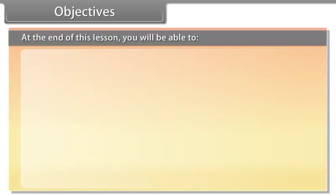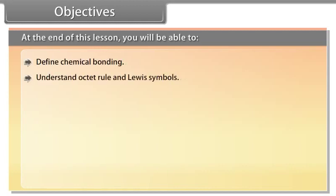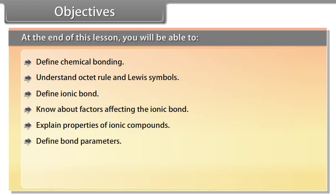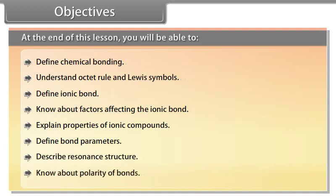At the end of this lesson, you will be able to: define chemical bonding, understand the octet rule and Lewis symbols, define ionic bond, know about the factors affecting the ionic bond, explain properties of ionic compounds, define bond parameters, describe resonance structure, and know about polarity of bonds.